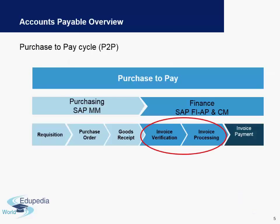We will also cover outgoing payments, document reversal, special GL, and Accounts Payable reporting. We will start with the Accounts Payable purchase-to-pay cycle. You will often hear the terminology P2P — P2P is nothing but purchase-to-pay. In Accounts Payable we are talking about the relations with vendors and all the transactions which take place with them.